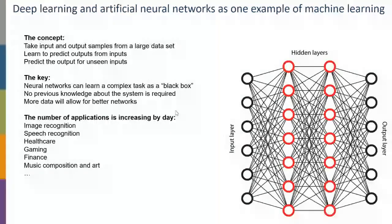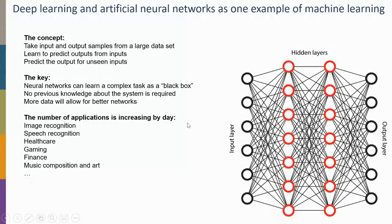Neural networks are very flexible, so the number of applications increases every day. You've probably heard about image recognition, speech recognition, healthcare, gaming, and finance applications — things we were quite sure machines couldn't do before, like beating a human at Go.